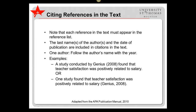When citing references in the text, note that each reference in the text must appear in the reference list. The last names of the authors and the date of publication are included in citations in the text. When there is one author, follow the author's last name with the year. Here are two examples. A study conducted by Genius (2008) found that teacher satisfaction was positively related to salary.